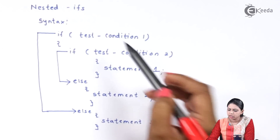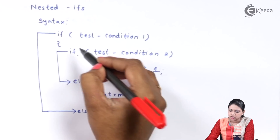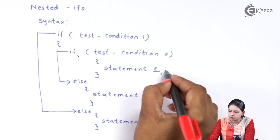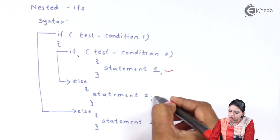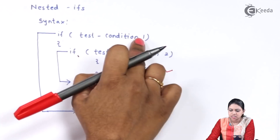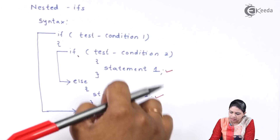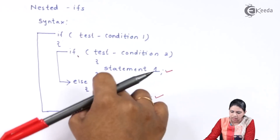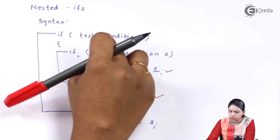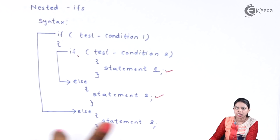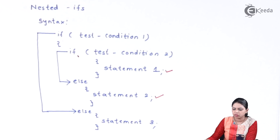So what this means: this else corresponds to the outer if. If the outer condition is true, then you execute statement 1, else statement 2. And if the outer condition is not true, then you execute statement 3. This is how we execute a nested if-else statement.